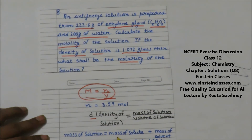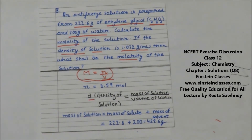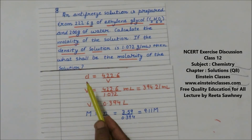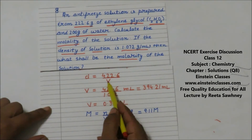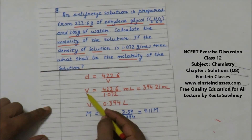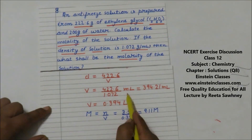Density of solution = mass of solution / volume of solution. Mass of solution = mass of solute + mass of solvent = 222.6 + 200 = 422.6 grams. Now we know the mass of solution and the density, so we can calculate the volume. Placing the values: 1.072 = 422.6 / volume, so volume is calculated in ml.